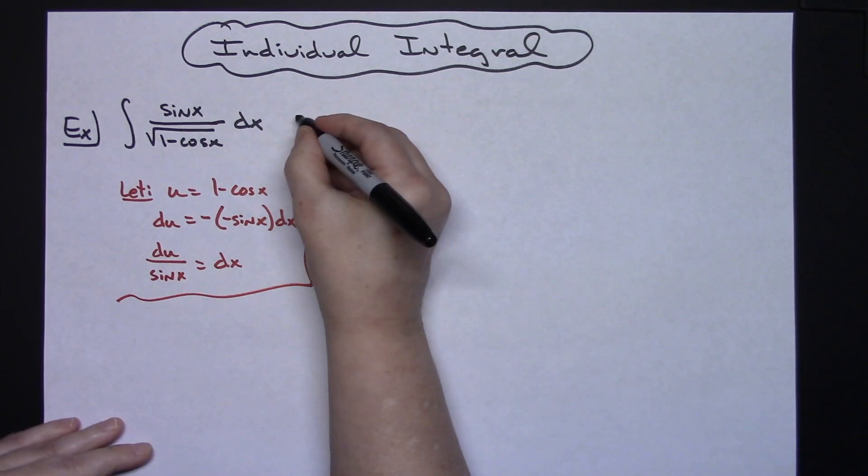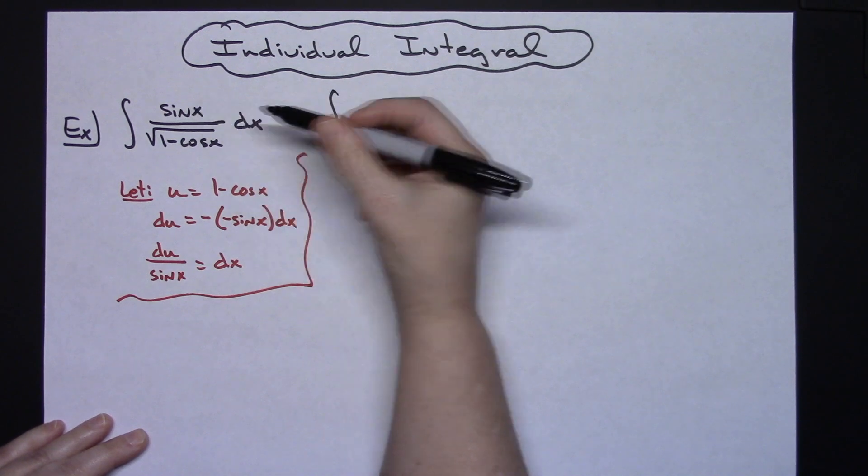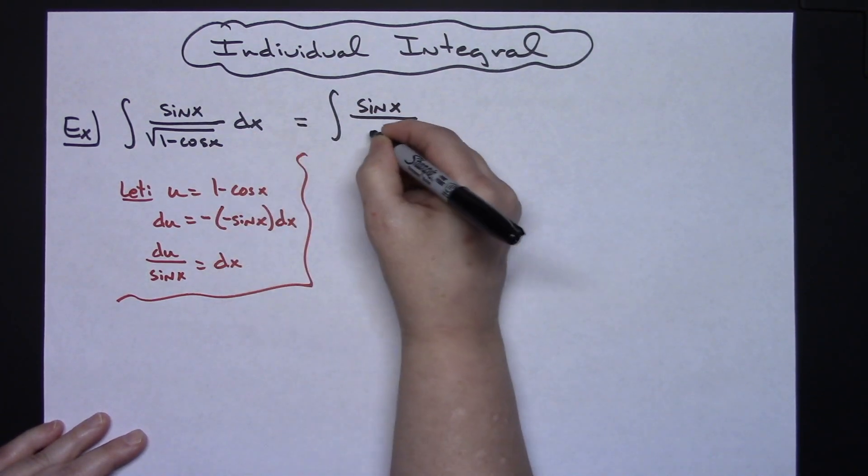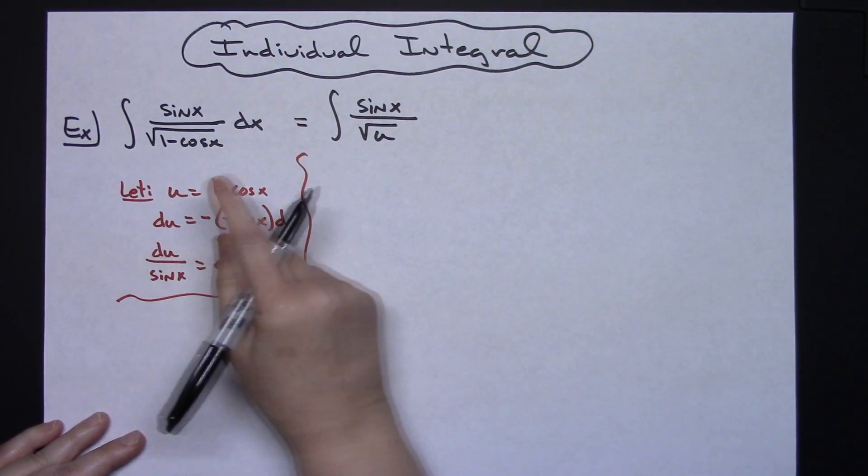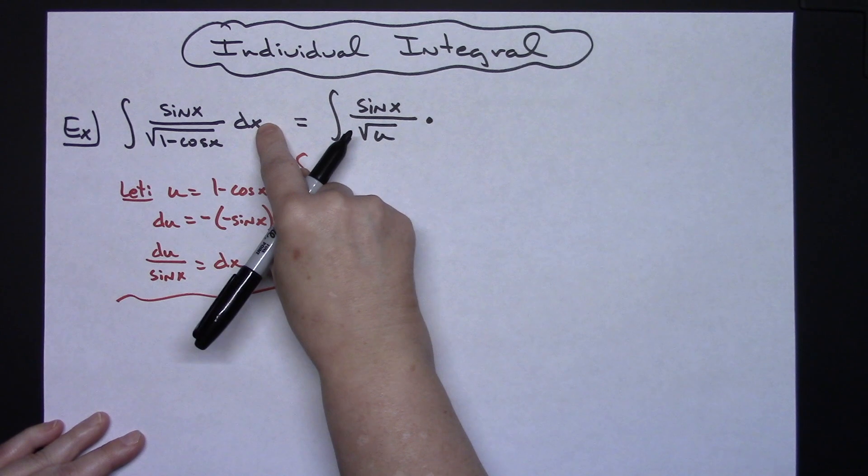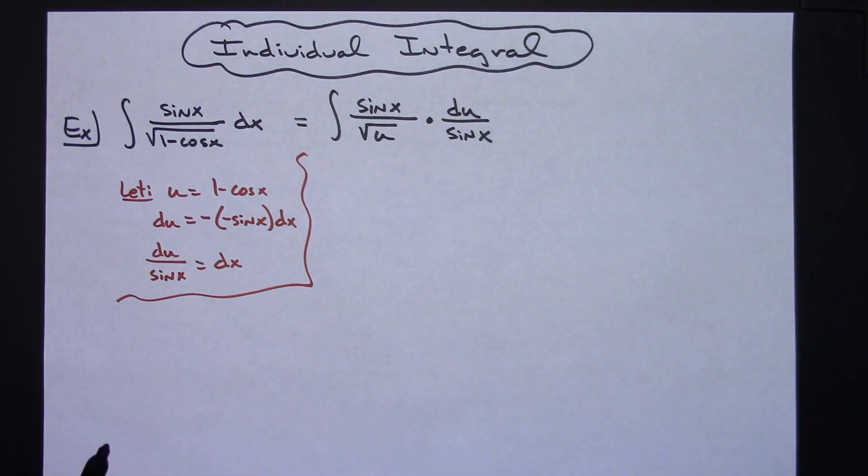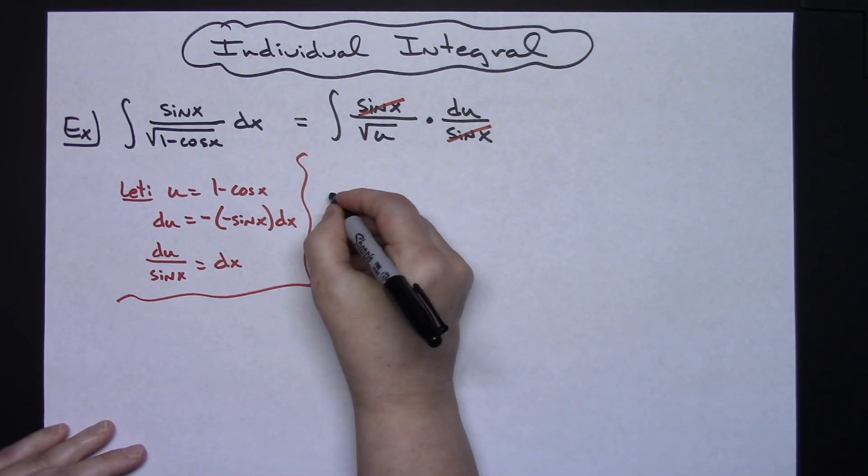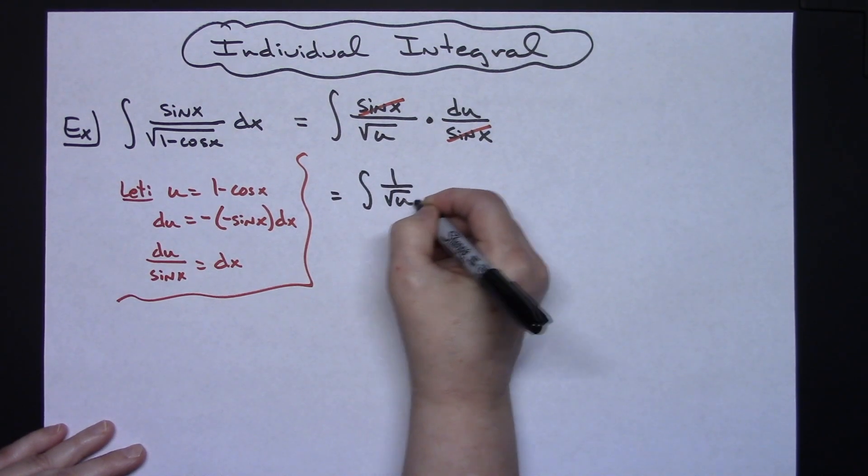Then I'm going to come back up to my original integral and start doing some substitutions. I'll have that sine x in my numerator. In that bottom I'll have the square root of u because I'm going to replace with what I said u was going to be equal. When I replace dx I will have a du over sine x. That's going to allow those sine x's to cross out which is going to leave me with the integral of 1 over square root of u du.